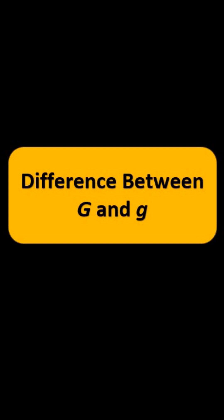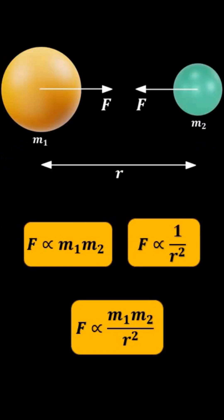So, the difference between capital G and small g in relation to gravitation. We are familiar with Newton's universal law of gravitation, which states that if there are two objects, let's say of mass m1 and m2, separated by a distance r.